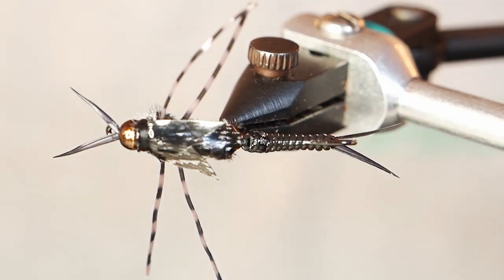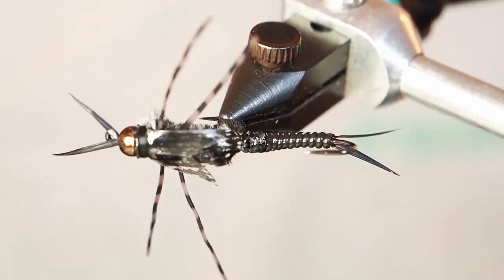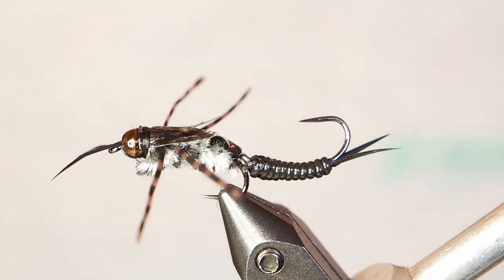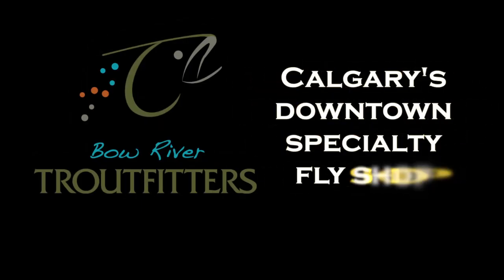But when this gets into the current, that tail should give us a little bit of lifelike movement. As well, I've got two barbless hooks on here. So if I get a short strike or something, that should help as well. You can get all these materials that we have at bowrivertroutfitters.com. Thanks so much for joining us. And please check out that other nymph pattern. We'll see you guys soon.